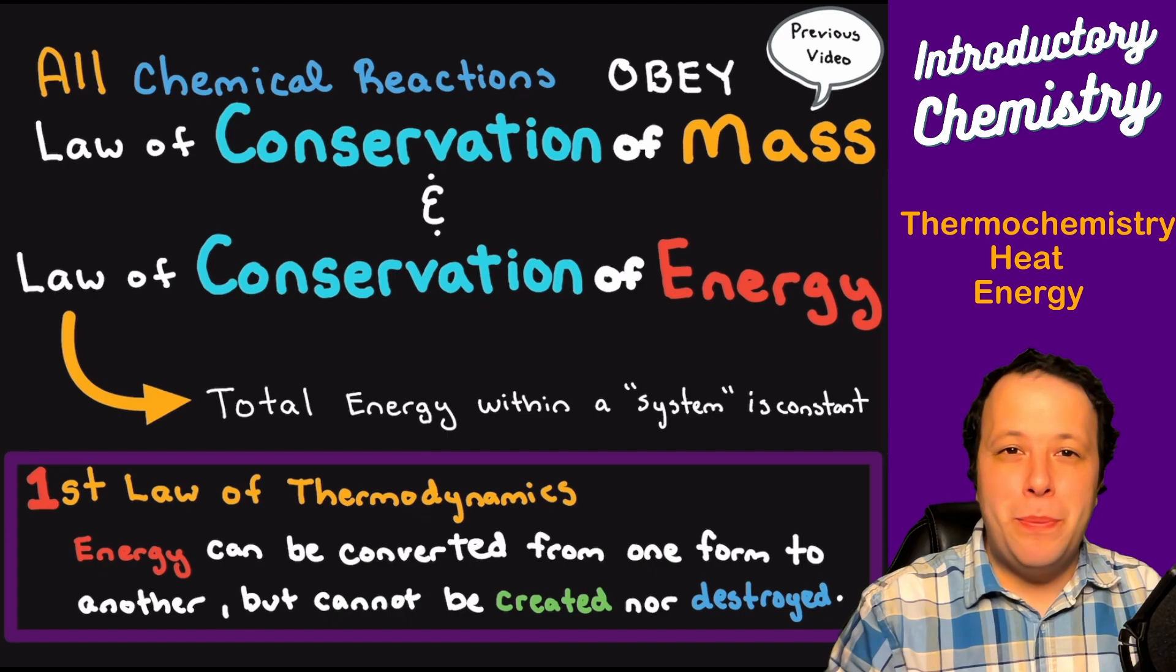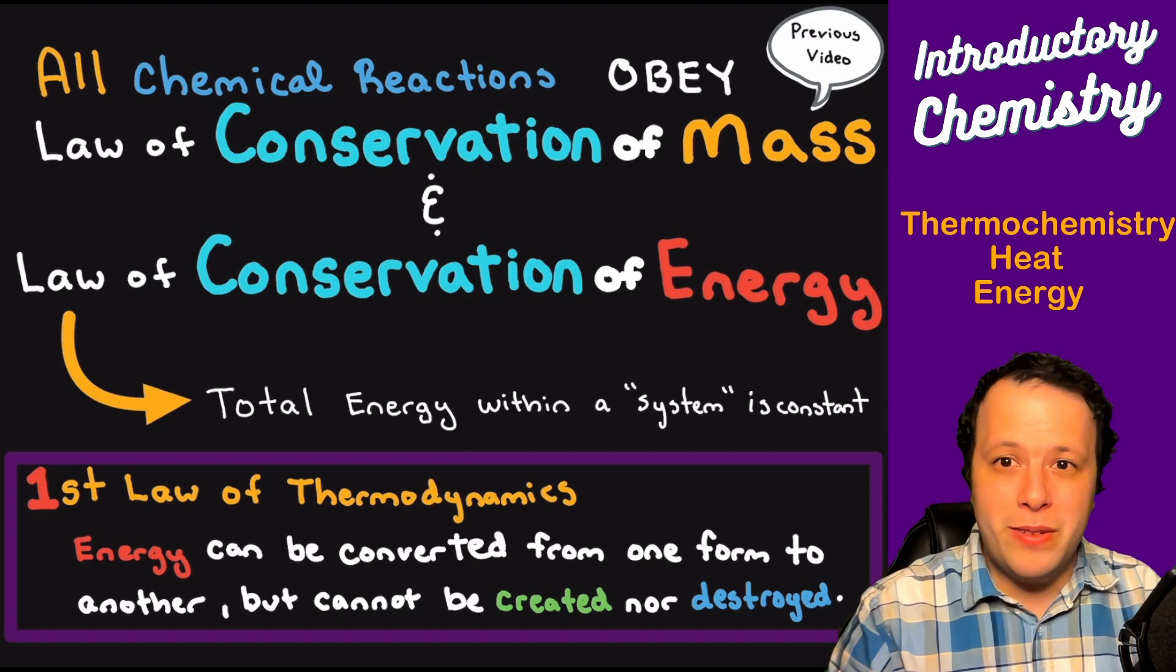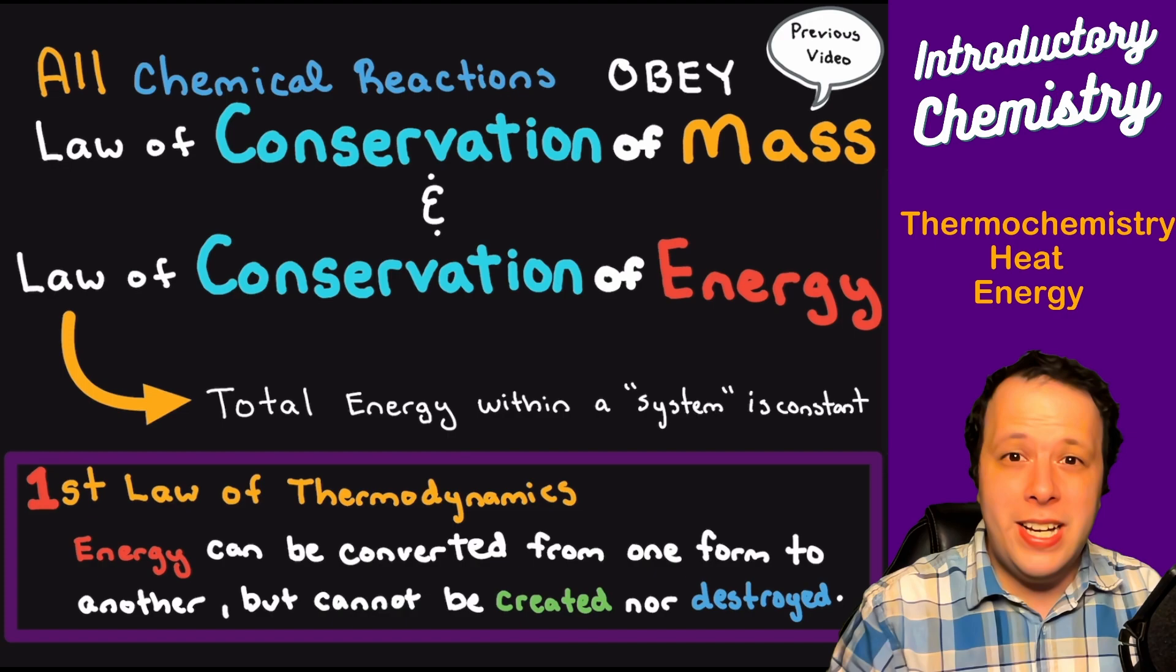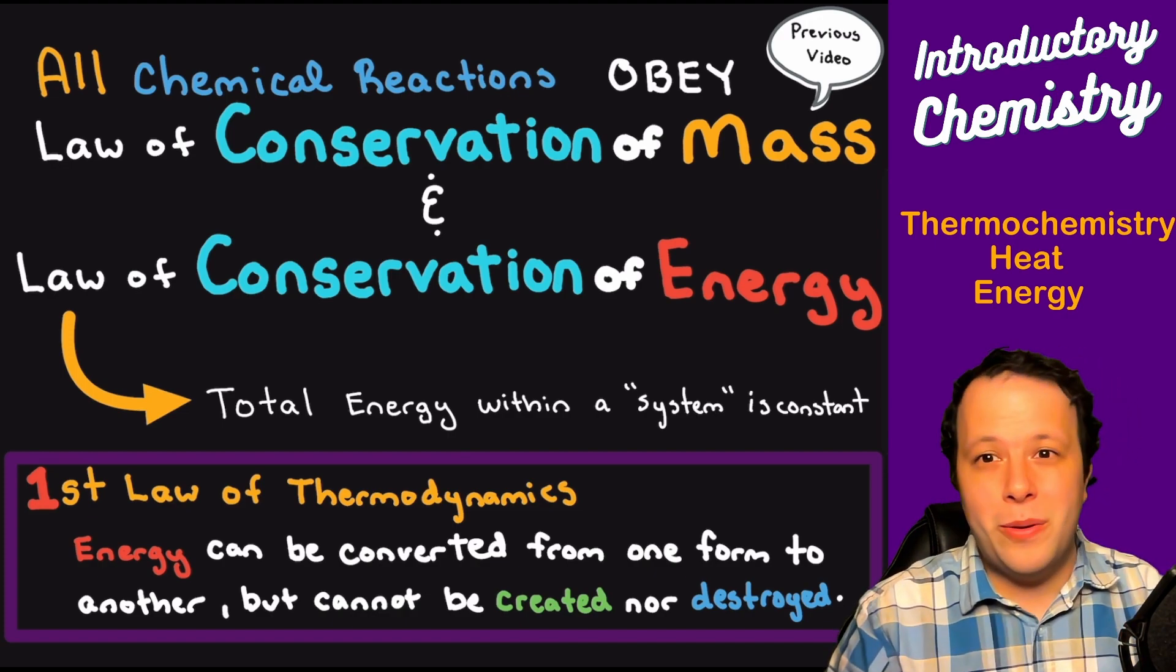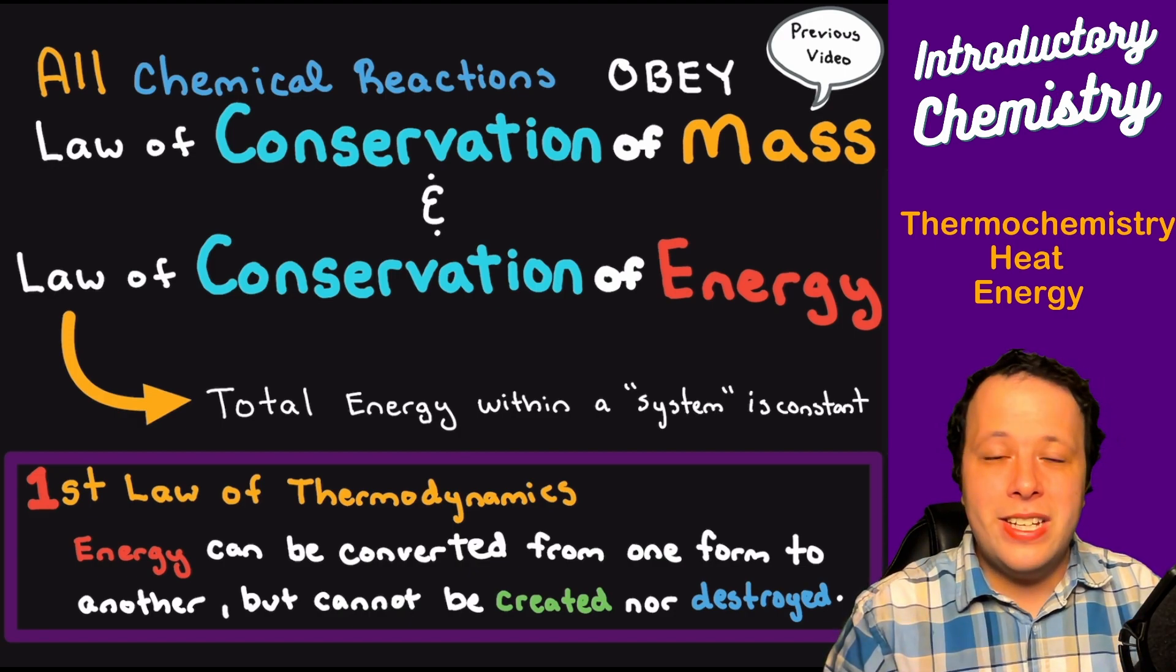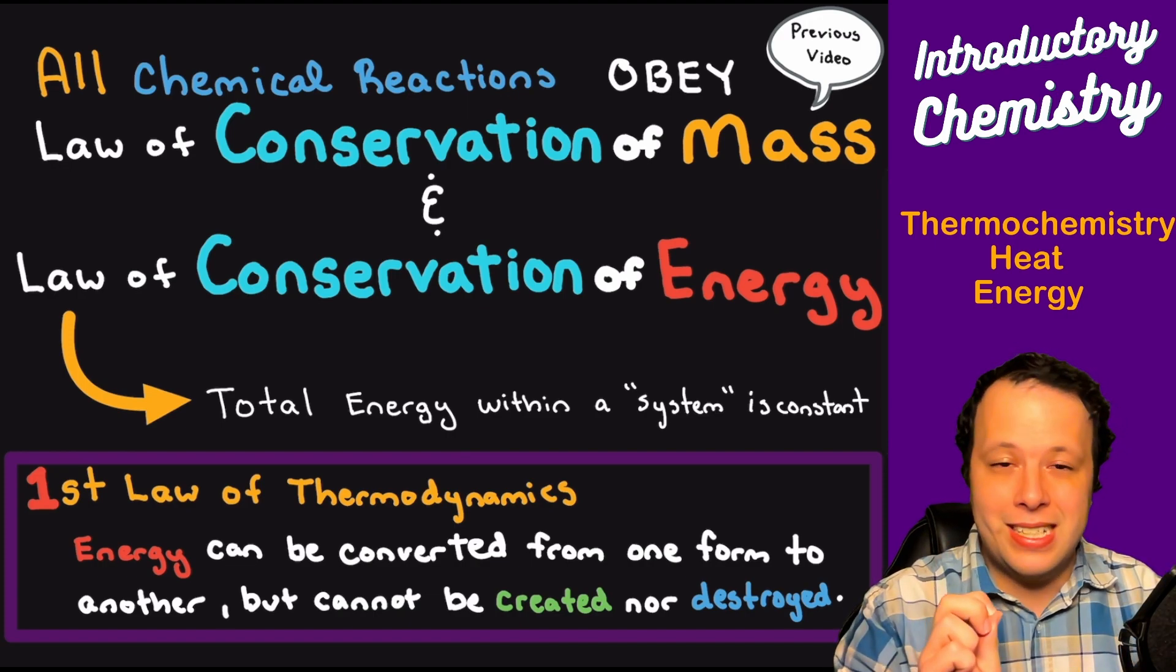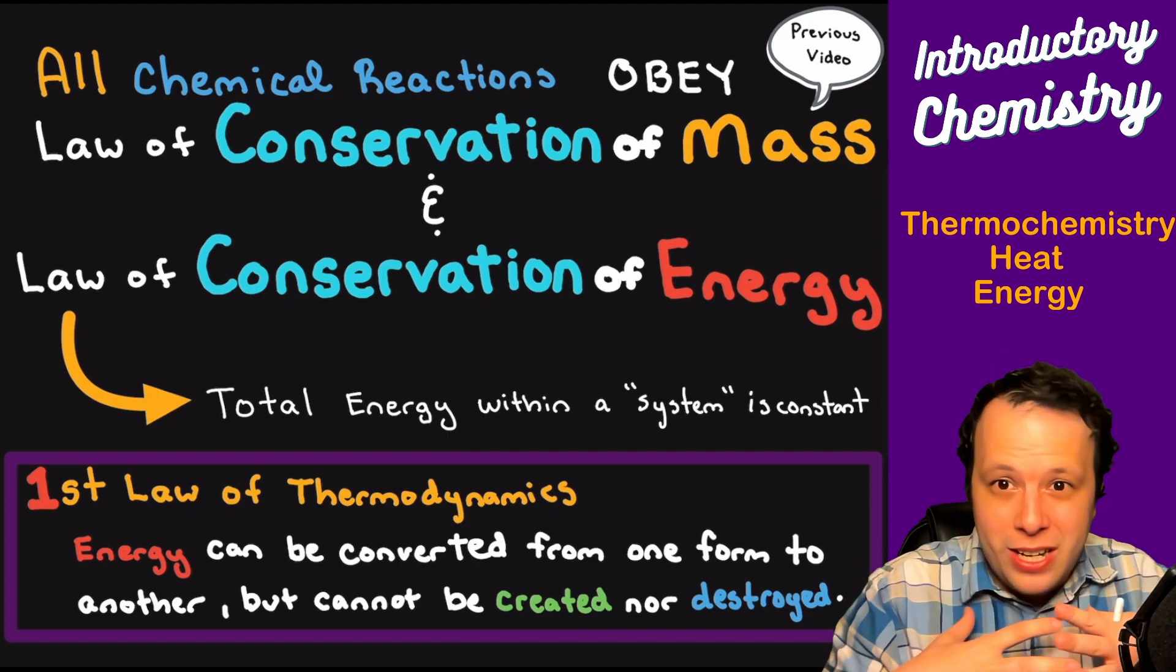All chemical reactions obey the following two laws: one is the law of conservation of mass, which we've covered in previous videos, and now the law of conservation of energy, also known as the first law of thermodynamics. What does that mean? Essentially it tells you that the total energy within a system is constant.